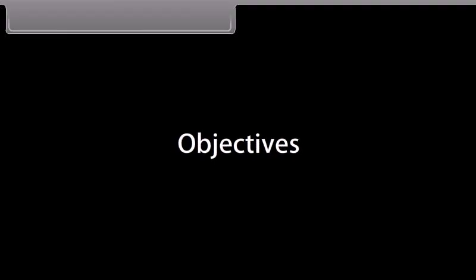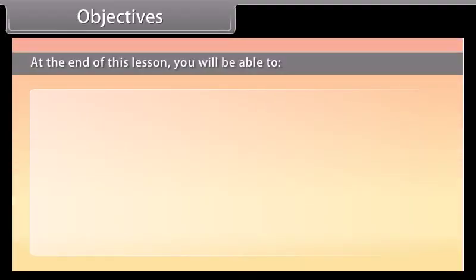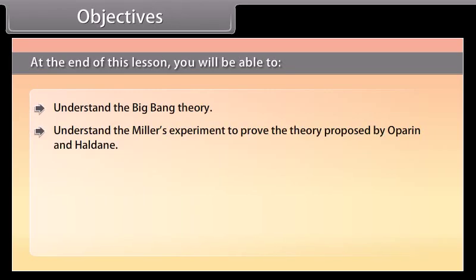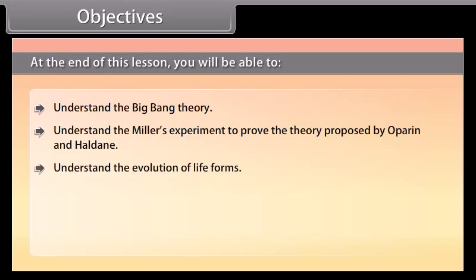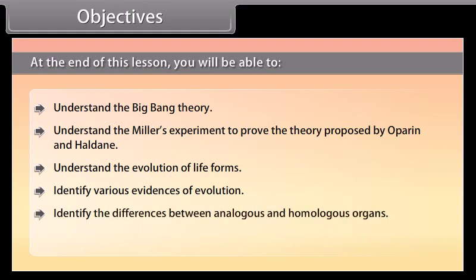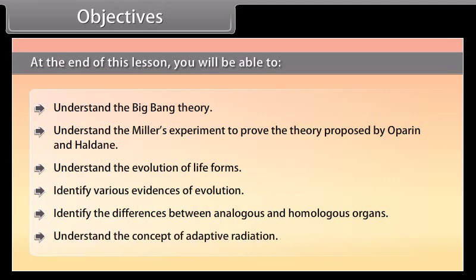Objectives: At the end of this lesson, you'll be able to understand the Big Bang Theory, understand Miller's experiment to prove the theory proposed by Oparin and Haldane, understand the evolution of life forms, identify various evidences of evolution, identify the differences between analogous and homologous organs, and understand the concept of adaptive radiation.